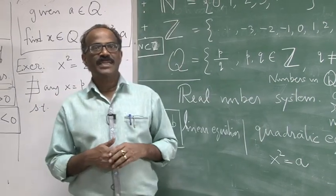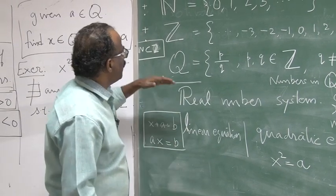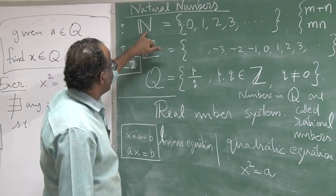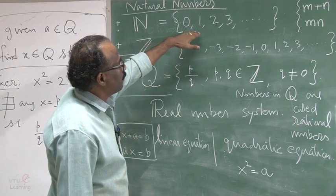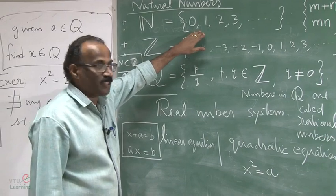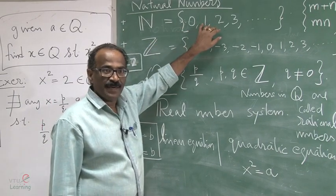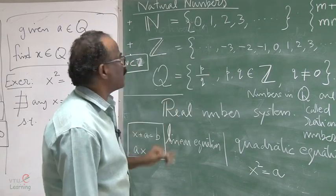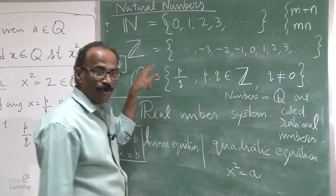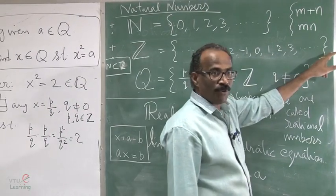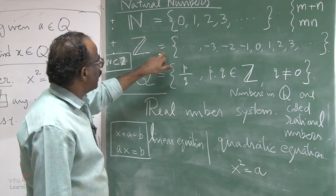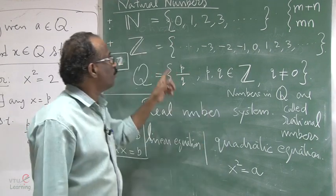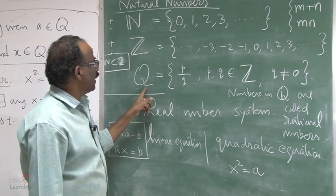Welcome to the second lecture on the e-section approach. Let me recap the first lecture: we introduced the natural numbers, and the solvability question of a plus x equal to b was not completely resolved in that system. To resolve it for any a and b, we introduced negative numbers — minus 1, minus 2, etc. — and then saw that division, equivalently the equation ax equal to b, cannot in general be solved either.